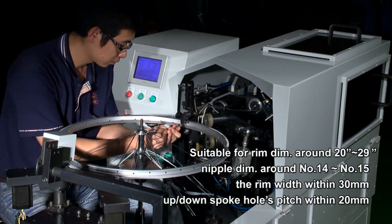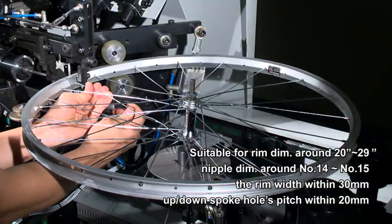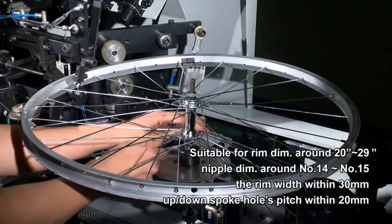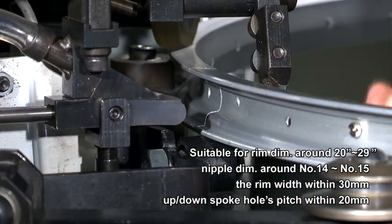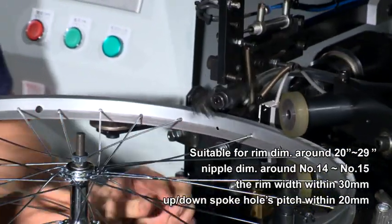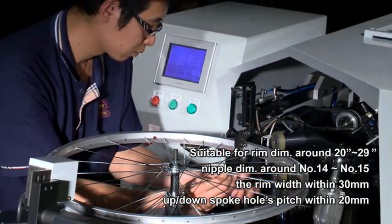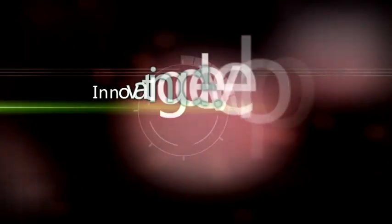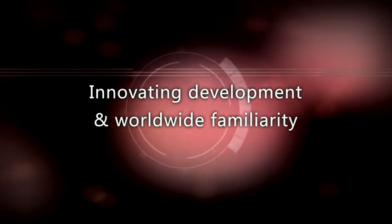Suitable for rim diameter around 20 to 29 inches, nipple diameter around number 14 to number 15. The rim width within 30mm, up/down spoke hole pitch within 20mm.